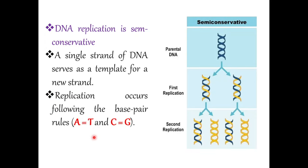According to the conservative model, DNA replication is an exact copy — just like making a paper photocopy, nothing is changed. In the dispersive model, it is something random: there is breakage and random association of the fragments.